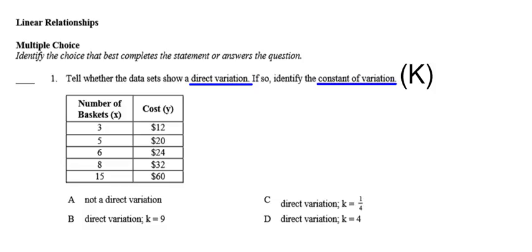A says it's not a direct variation. B says it is a direct variation, and K is 9. C says it's a direct variation, and K is 1/4. D says it is a direct variation, and K is 4. Make sure you're looking at the table.